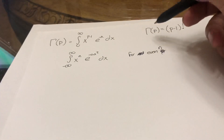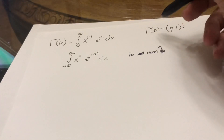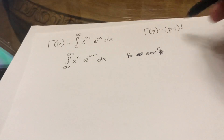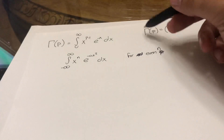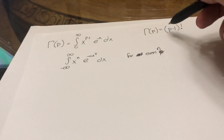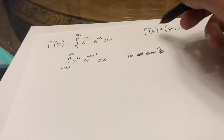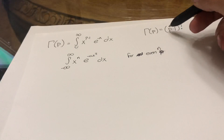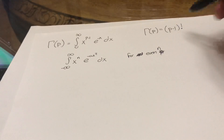The gamma function is also very well-known because it is related directly to the factorial. So if you take the gamma function of a natural number p, that's going to be the same as the factorial of that number p minus 1.